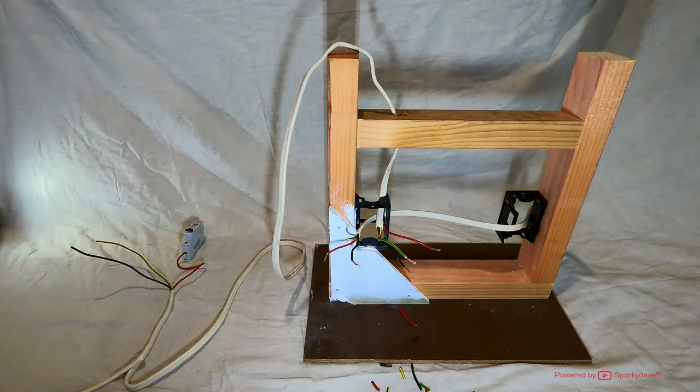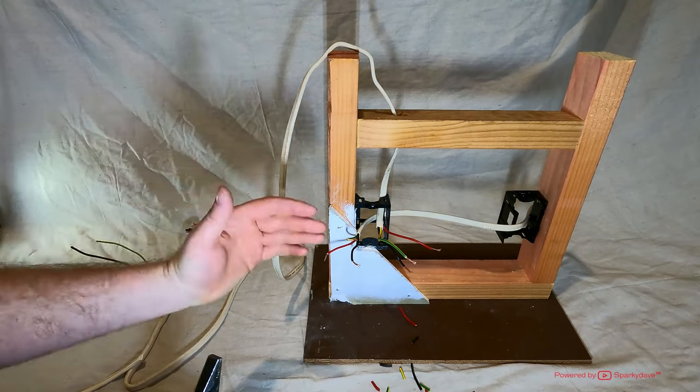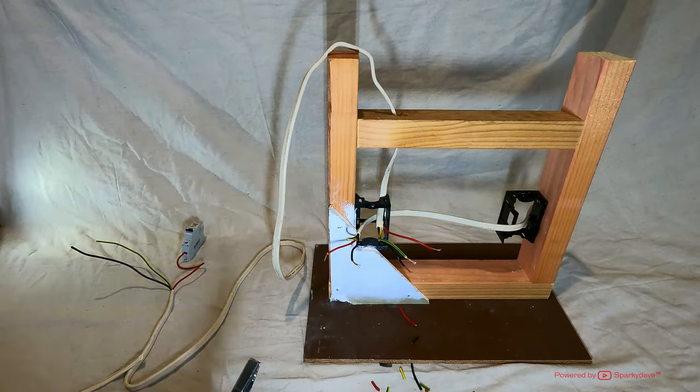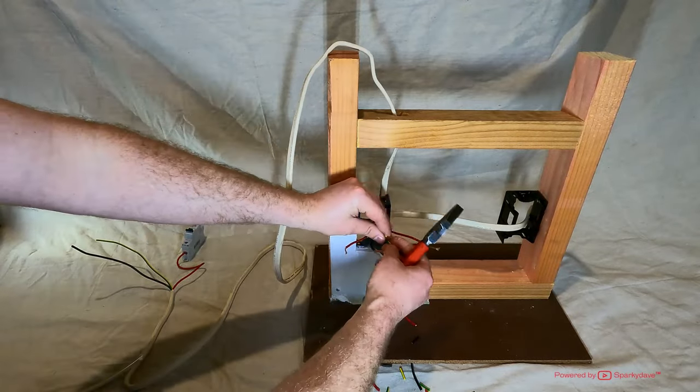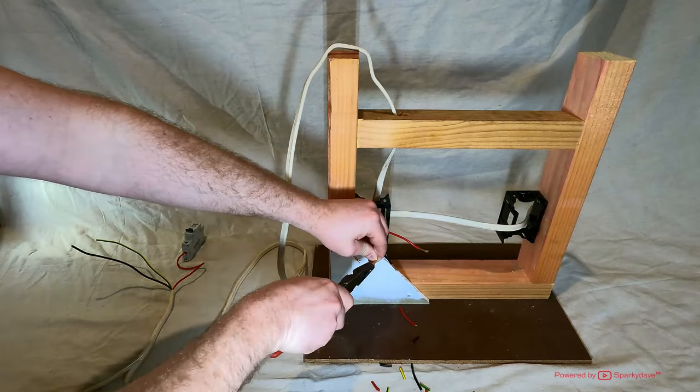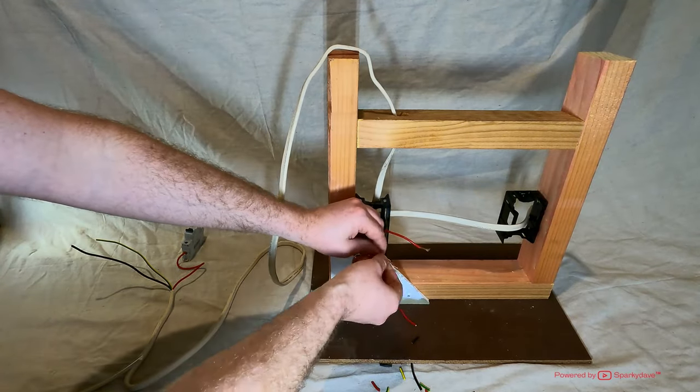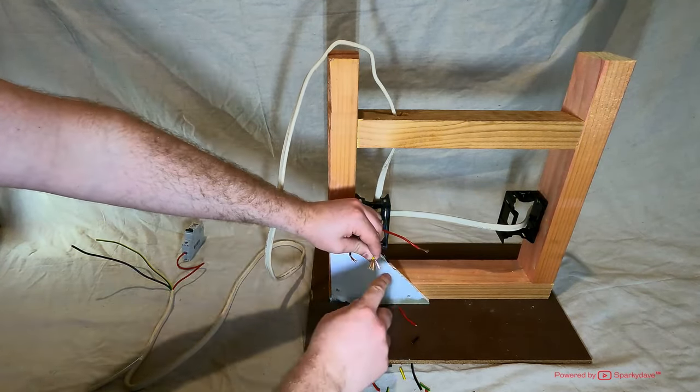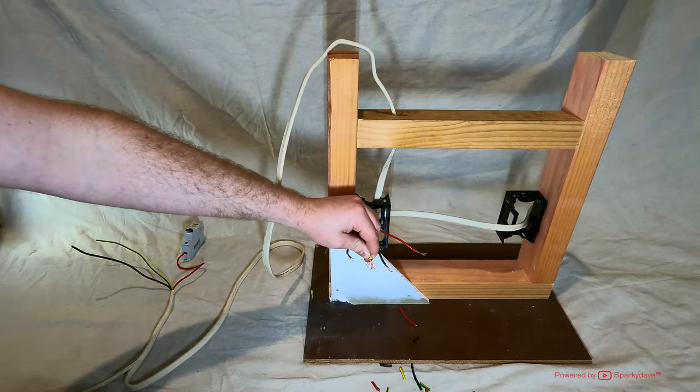So your two green ones go together, and then we'll put it together. Splay the copper ends out a bit and then start twisting them together.